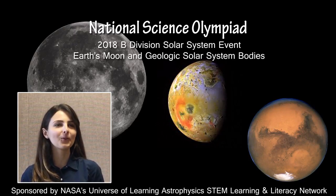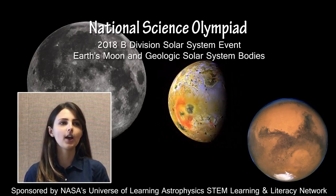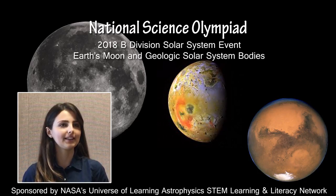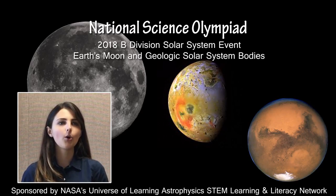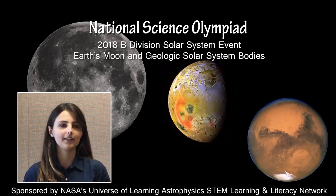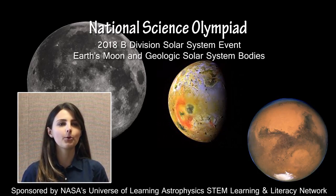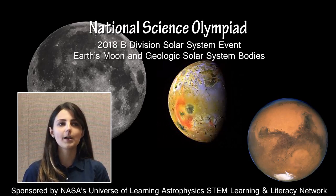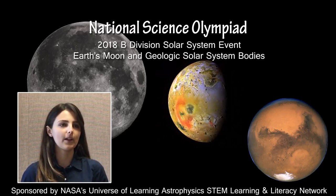This presentation is an overview of the content and resources for the National Science Olympiad, NSO, Division B 2018 solar system event. The NSO 2018 national competition will be held at Colorado State University in Fort Collins, Colorado from May 18th to 19th, 2018. My name is Claire Burch and I am a former competitor in both B and C Division Science Olympiad and a physics major at Harvard College. I am now working to develop the astronomy event materials for our middle and high school competitors.